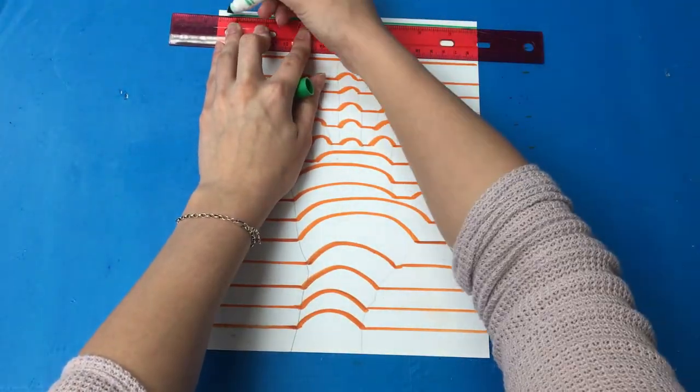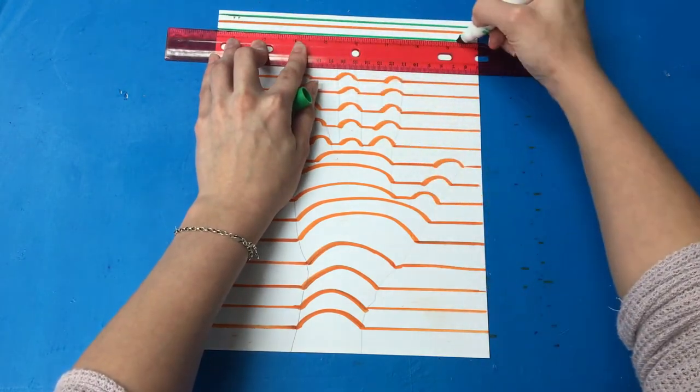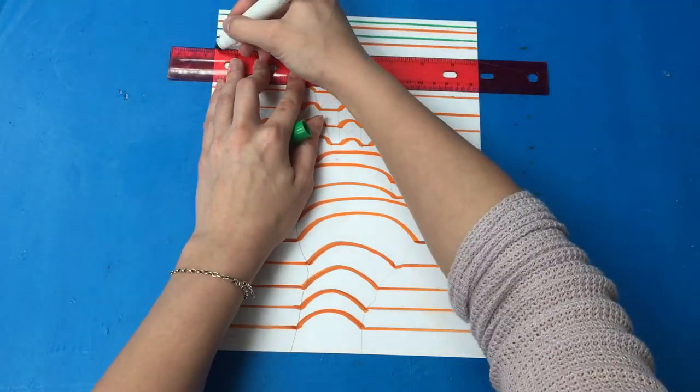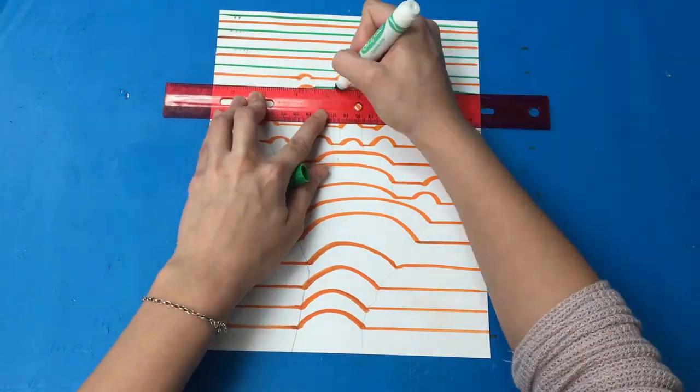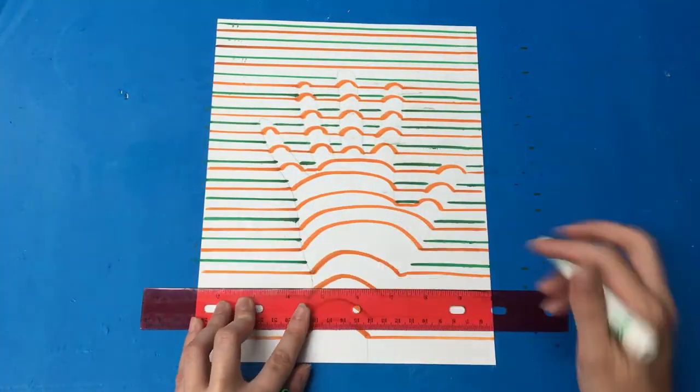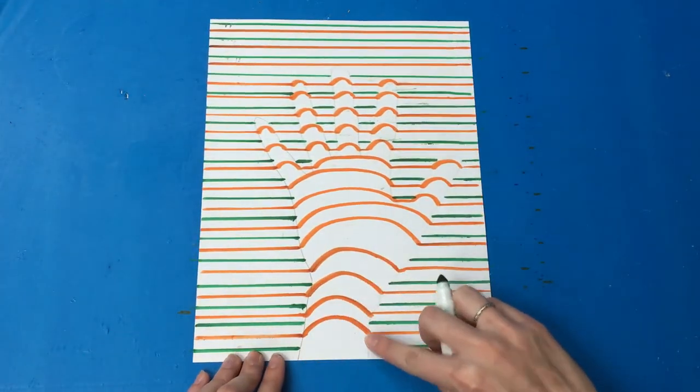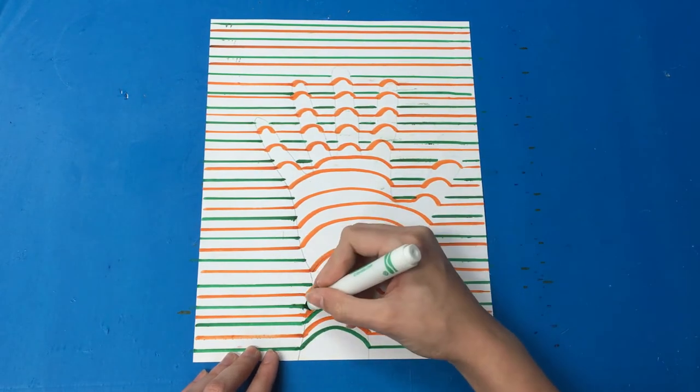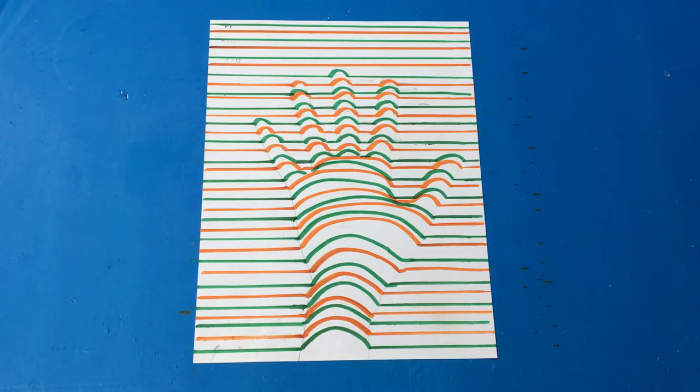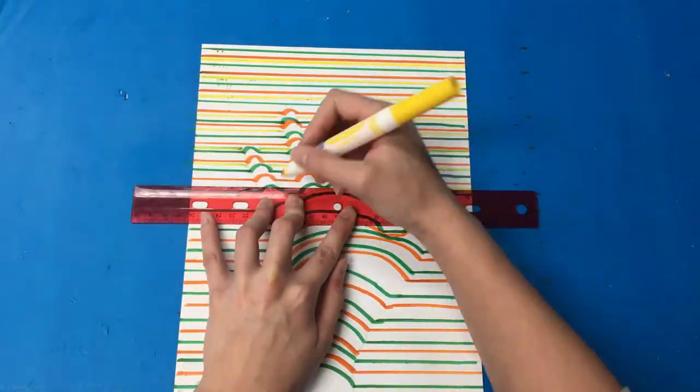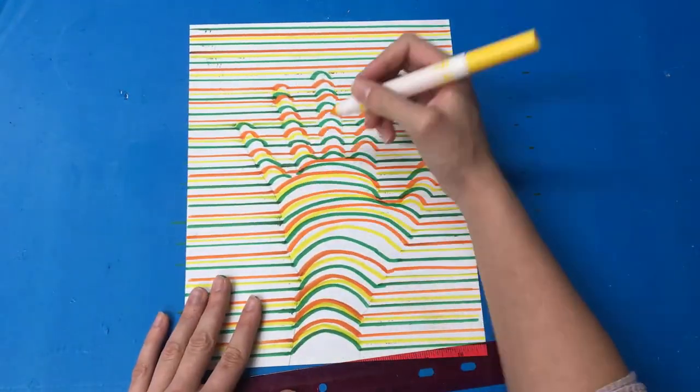Then, taking your ruler and a different colored marker, repeat the same process. Straight lines in the background and curved lines in the hand. For the coolest effect, use many different colors.